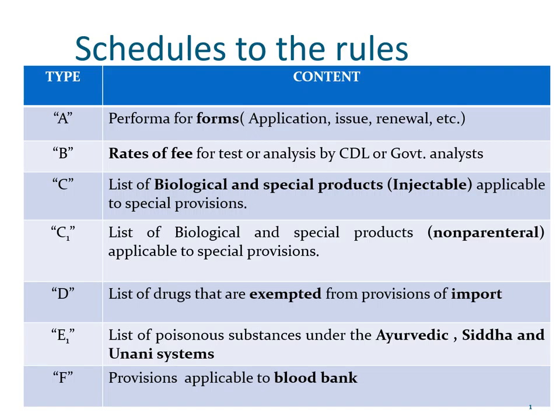We will now look at the schedules to the DNC rules. These are the schedules that I have talked about intermittently when I was explaining the various aspects of license to manufacture or license to sell, etc. Let me first describe the schedule types to you, and then as we move forward, I will take up the most important schedules and explain them. In my first three slides, I have just put down the type, the name of the schedule, and its content.